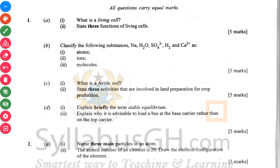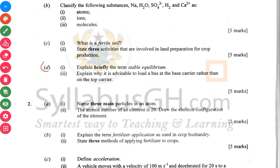Then C2 has to do with three activities that are involved in lung preparation. Question 4D has to do with physics — stable equilibrium — and you're asked to explain why it's advisable to load the base at the base rather than the top. So why should the load be put at the base? To increase the stability.